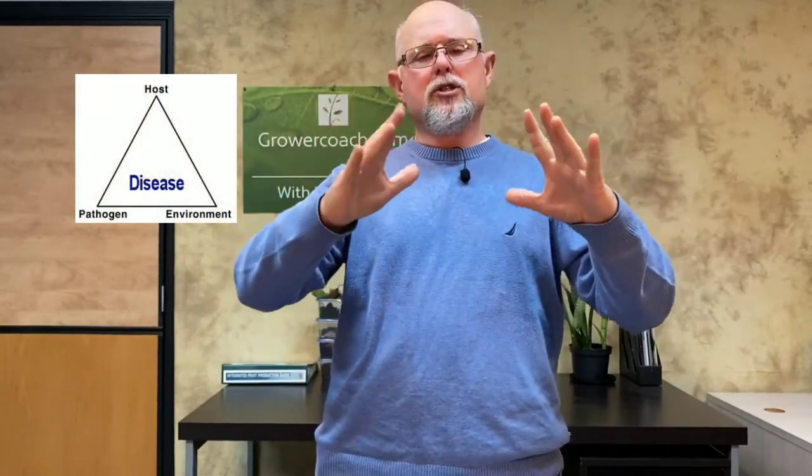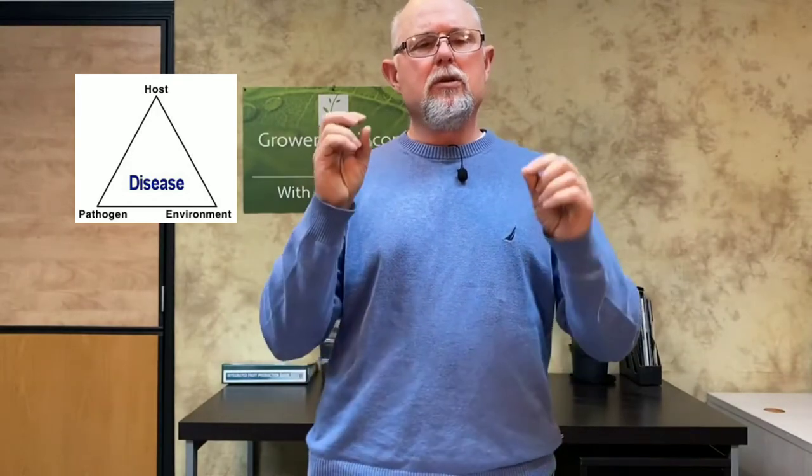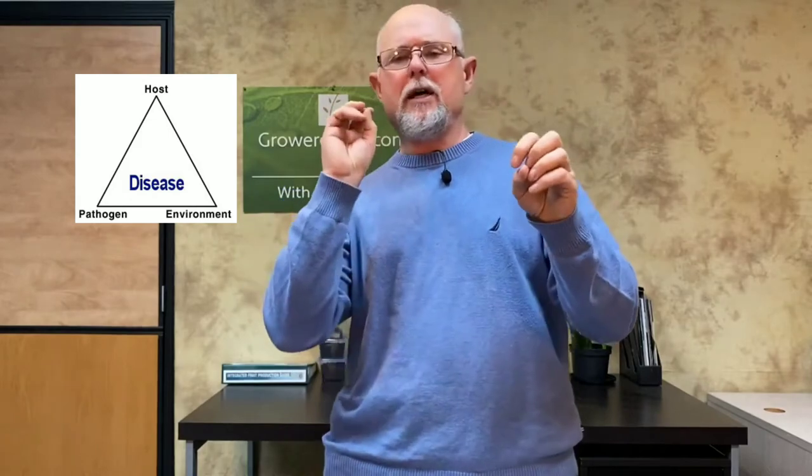Today I wanted to talk about the disease triangle — not to be confused with the devil's triangle. The disease triangle is a known, documented concept. In order to have disease in plants you have to have three aspects: you have to have the disease itself, you have to have the plant that gets infected, and then you have to have the right conditions.